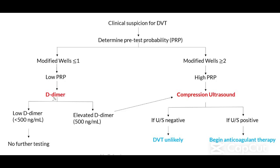If that D-dimer is low, meaning less than 500, then we do not pursue any additional testing for DVT. If that D-dimer, however, is high, then we are going to need to get a compression ultrasound.